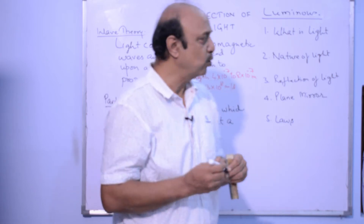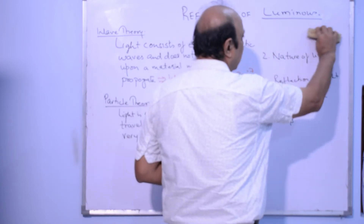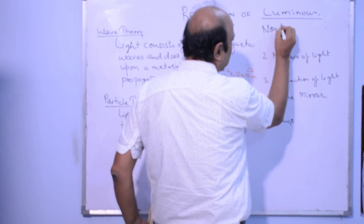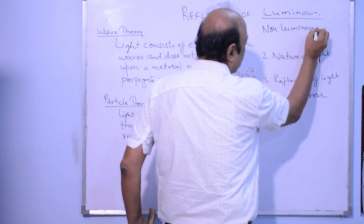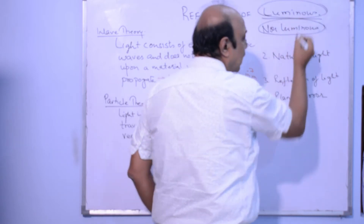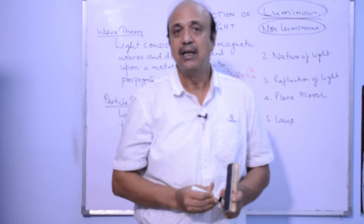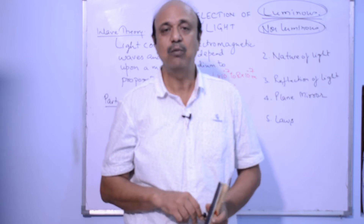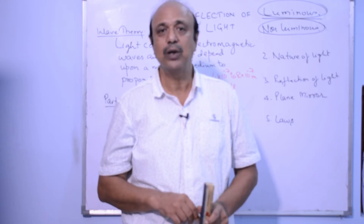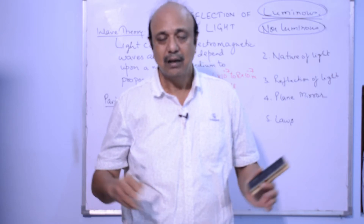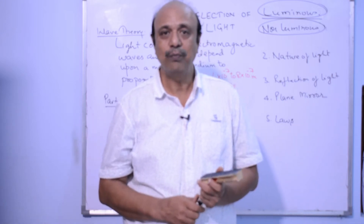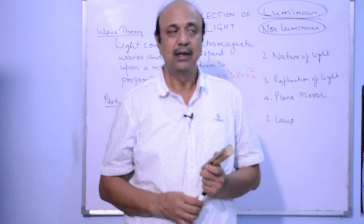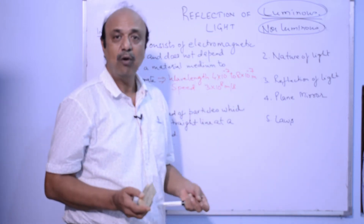So all objects are either emitting light or not emitting light — either they are luminous objects or non-luminous objects. But we are able to see all of them because either they are a source of light or they are reflecting light to us. If that light does not reach our eyes, we will not see the object — that is what happens in dark nights or in a dark room.